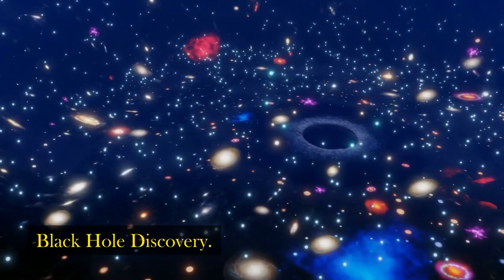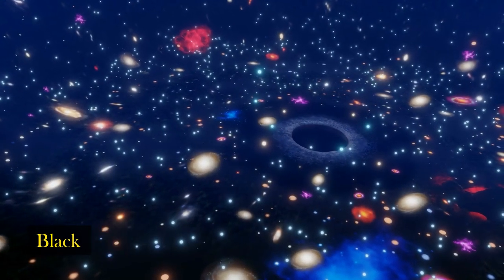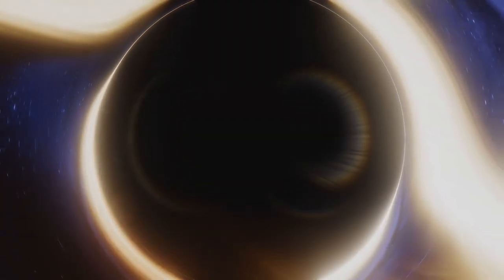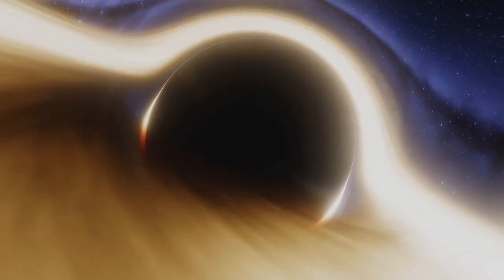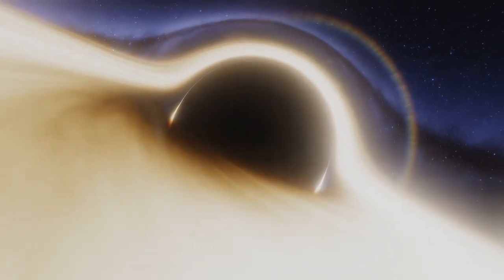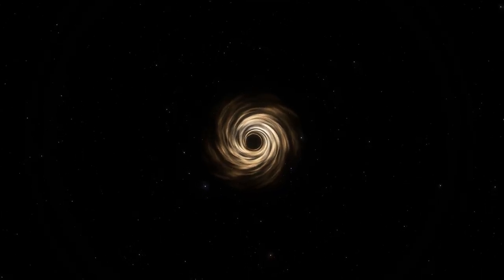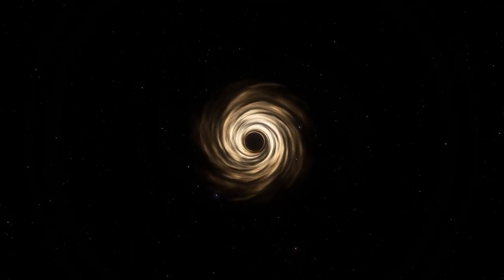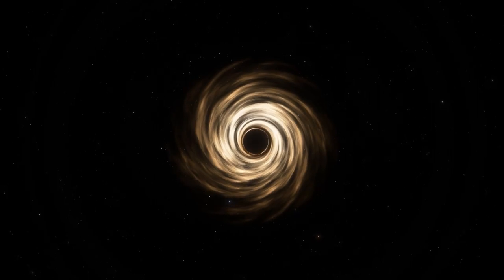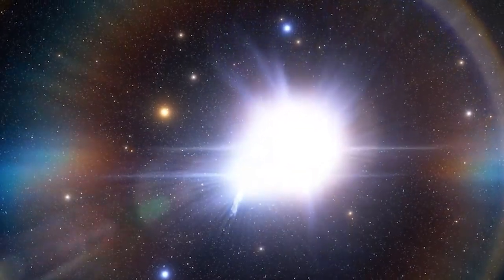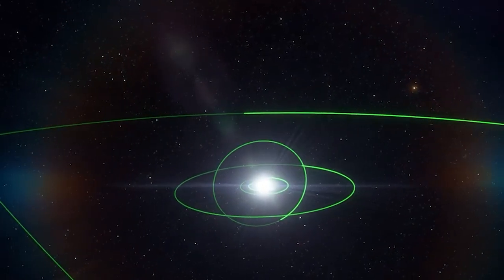The black hole discovery, called Sagittarius A*, pronounced Sagittarius A star, sits some 26,000 light years from Earth, and turns out to be about 4 million times more massive than the Sun. In May 2022, the Event Horizon Telescope collaboration released the first image of Sagittarius A*, incontrovertible evidence of its existence.